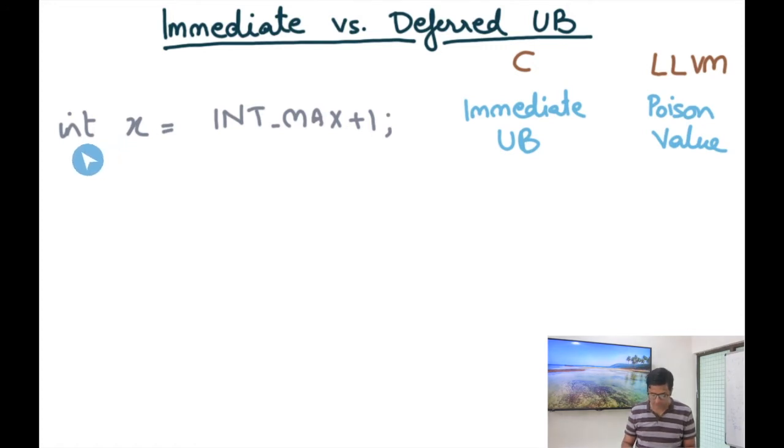So let's take this example int x equals int max plus 1. Now this is an example where int max plus 1 will cause signed integer overflow and because it will cause signed integer overflow in the C programming language, it will trigger undefined behavior and I'm going to call that immediate UB.